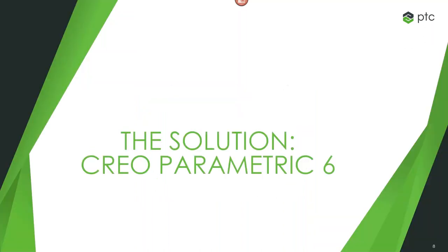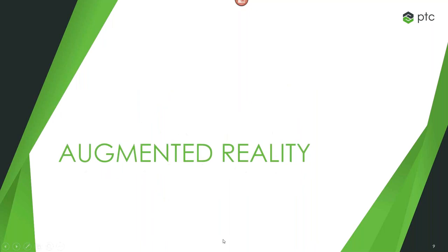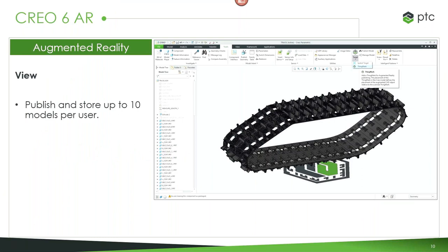I'd like to talk about some of the augmented reality changes within Creo. Since Creo 4, we've pushed the idea of incorporating augmented reality more within our CAD product. You can go to the Tools tab — no extension needed — and place a spatial target or ThingMark on your model, print that out, and see your model on your desk or on the floor with just a smart device. In Creo 6, we've expanded these capabilities to publish up to 10 models per user to view in augmented reality.